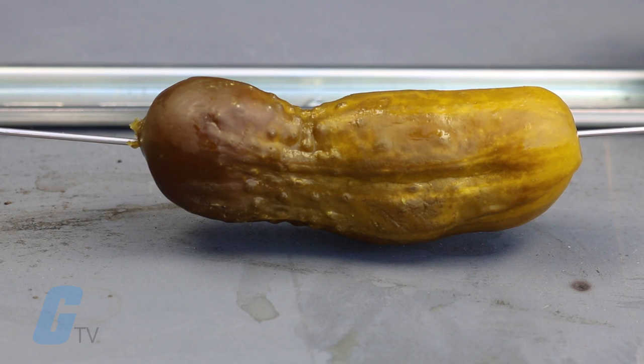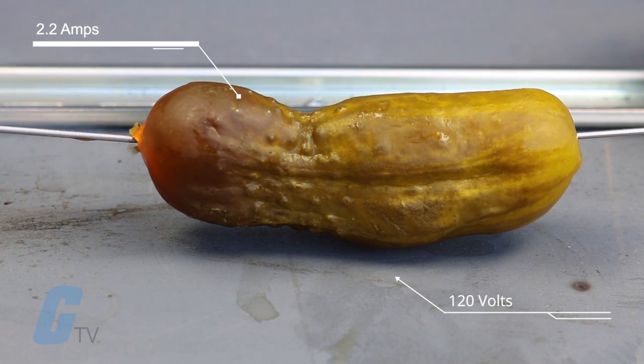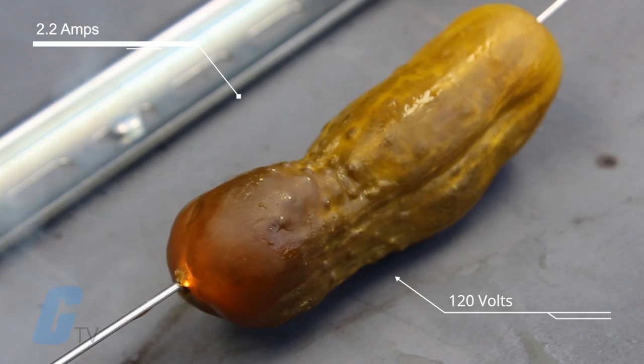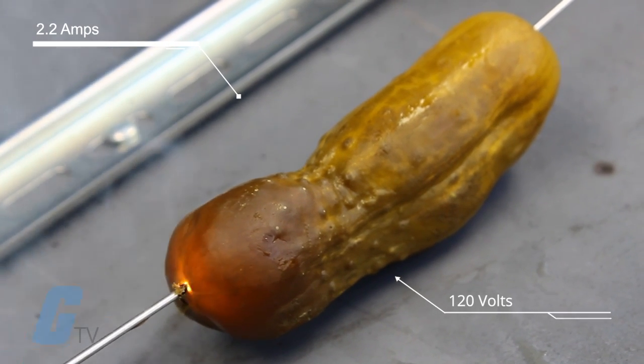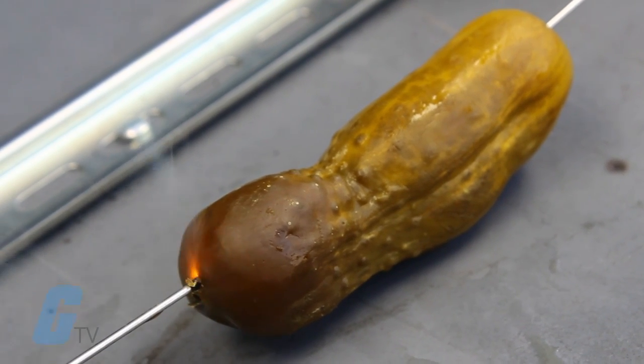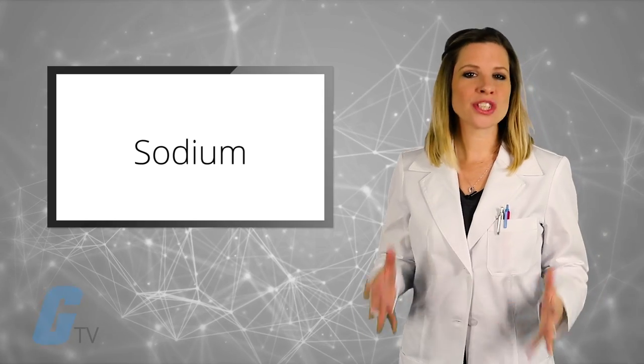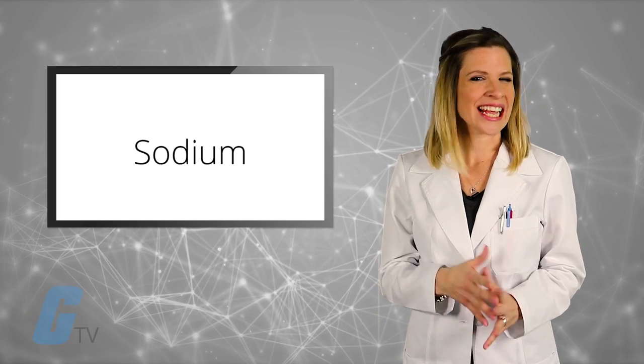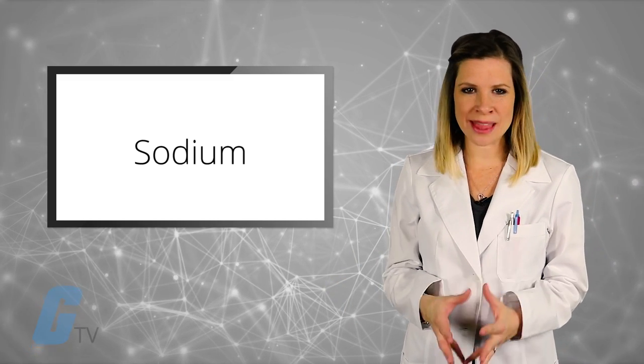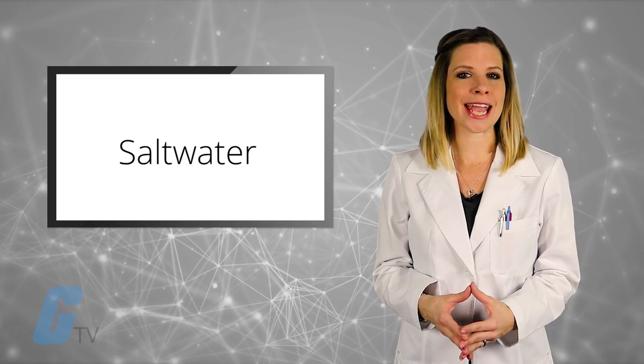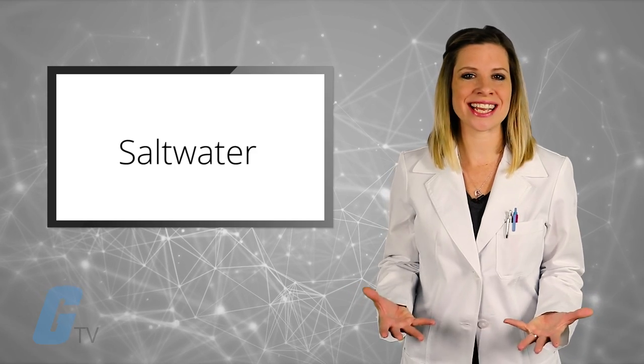First up is the 120 volt test. This one measured at 2.2 amps. The sodium in the pickle's brine mixture ends up creating a salt water-like reaction in the pickle. Salt water is a good conductor because it is an electrolyte solution.